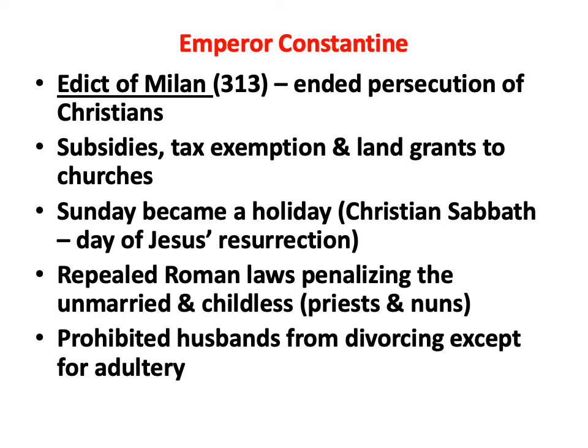Emperor Constantine, in the year 313, issued the important Edict of Milan, a statement from the Emperor that officially ended the persecution of Christians that had continued for three centuries. Near the end of his life — some say literally on his deathbed — Constantine became a Christian. During the last years of his life, he took many actions to favor the Christian church: he provided subsidies to Christian churches, exempted them from taxes, and gave the churches large grants of land — not just land to physically build the church, but many tens of thousands of acres which the church could sell or rent out for farming.